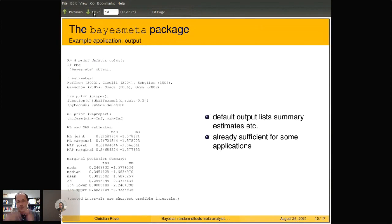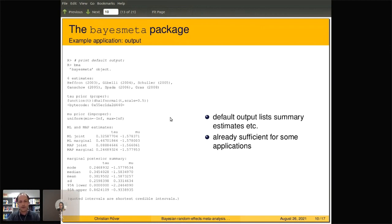When we print out the bma object, we get the usual output: a little summary, the estimates, the input data, and so on. That's probably sufficient for some applications already. But the interesting bits come when you try to access the individual list elements of the returned bayesmeta object.